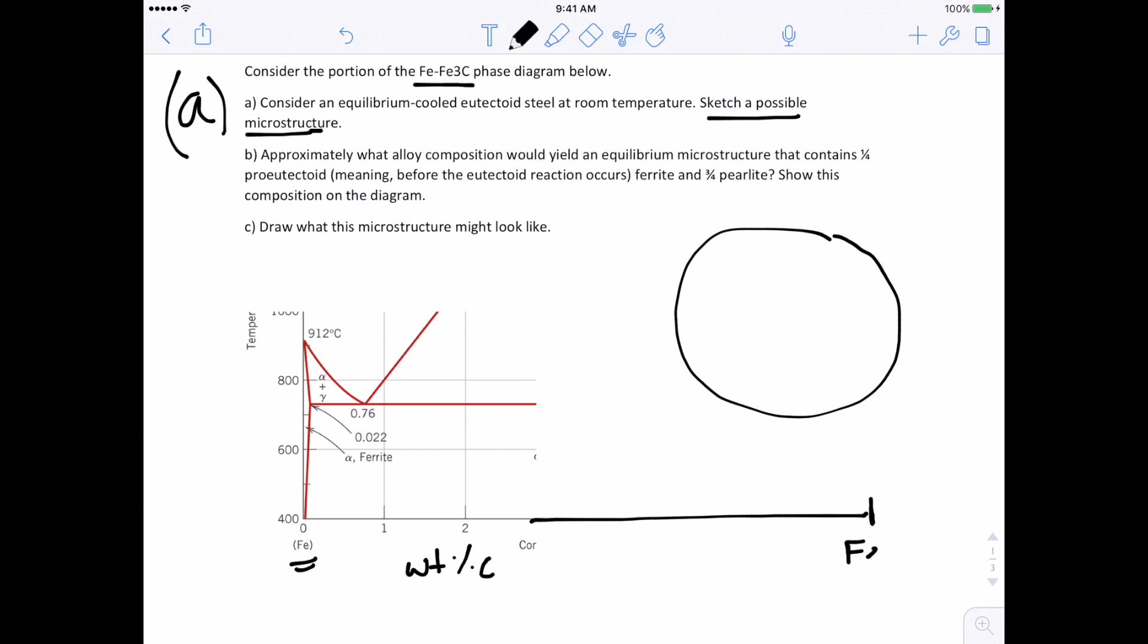It ends up over here corresponding to Fe3C which is cementite and that corresponds to 6.7 weight percent carbon. Alright and so over here this pure iron phase is called ferrite. That's the BCC phase of iron.